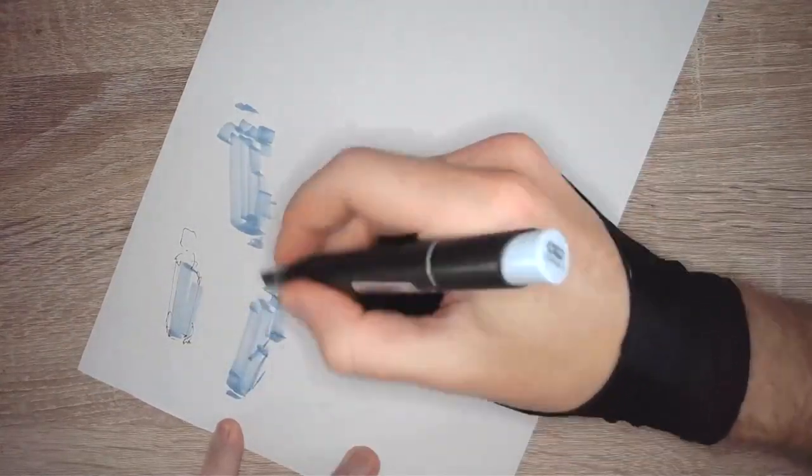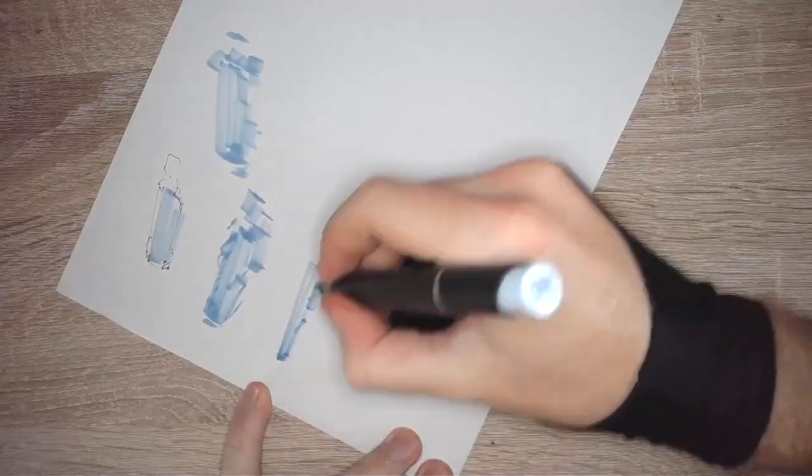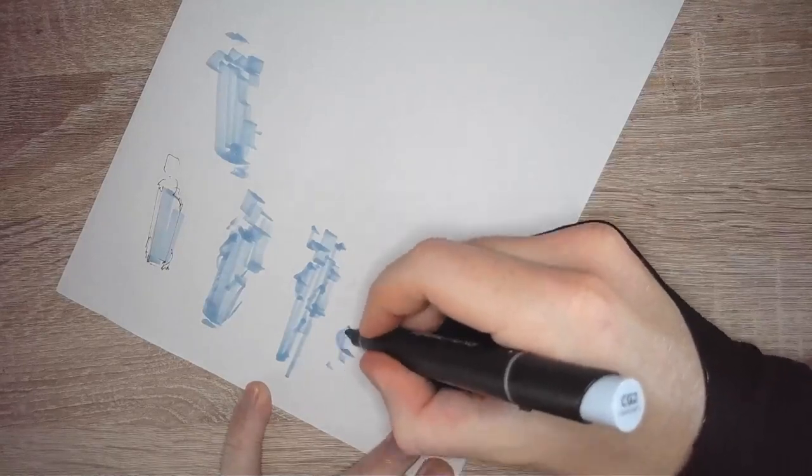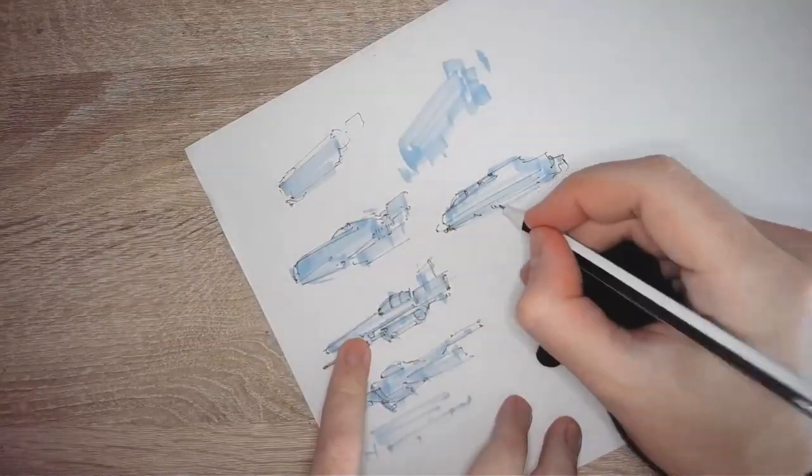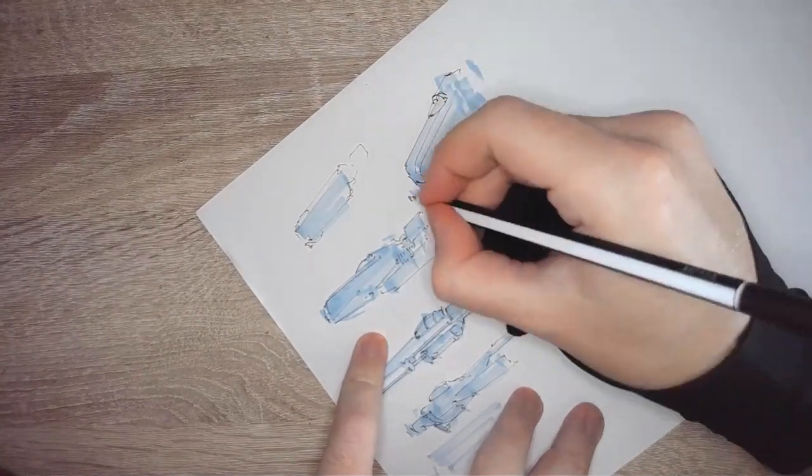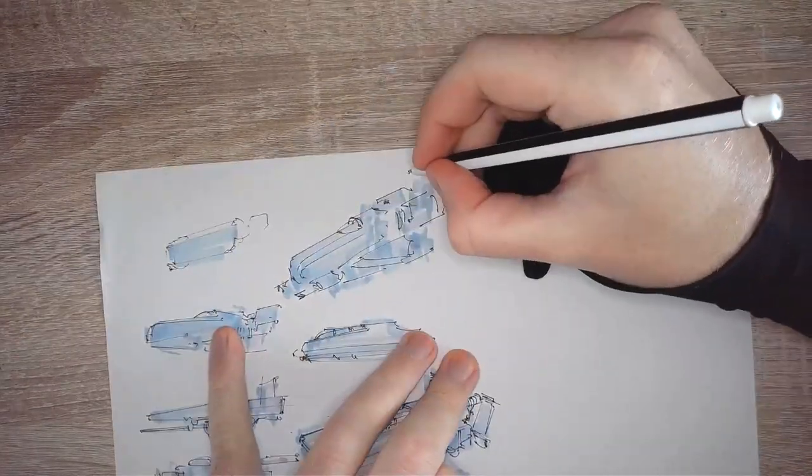I start by designing a starship for my astromech droid. And as per usual, this process starts with doing some thumbnail sketches. In the beginning, I just wanted to go with a random generic fighter craft design, but relatively quickly in the thumbnail process, I started bringing in some more detail and my design started leaning more towards the Star Wars style.